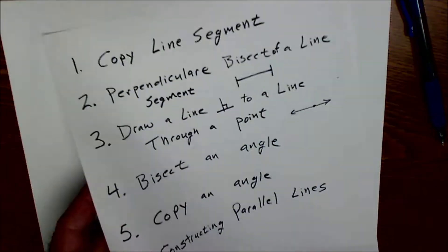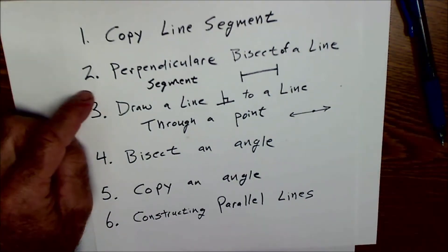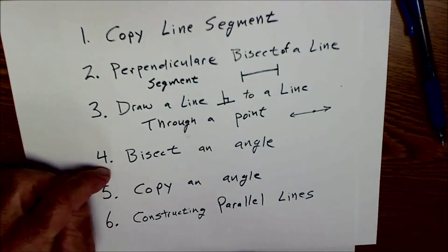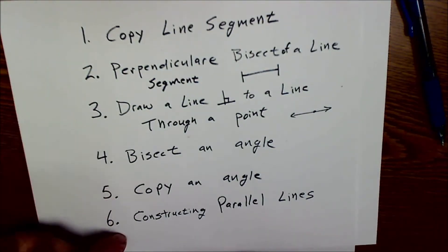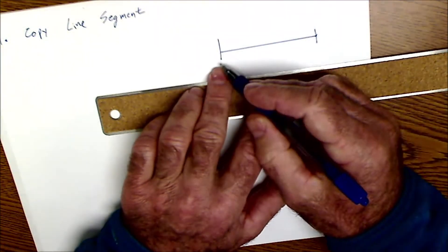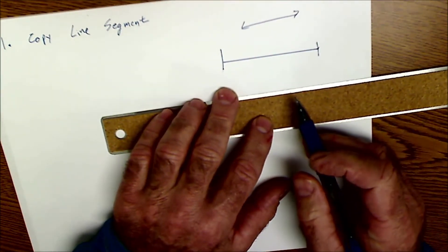Okay, here are six constructions right here. Copy a line segment, perpendicular bisector of a line segment, draw a line perpendicular to a line through a given point, bisect an angle, copy an angle, and constructing parallel lines. So a line segment has a starting place and an ending place. A line has arrows on each end to say it's infinite.